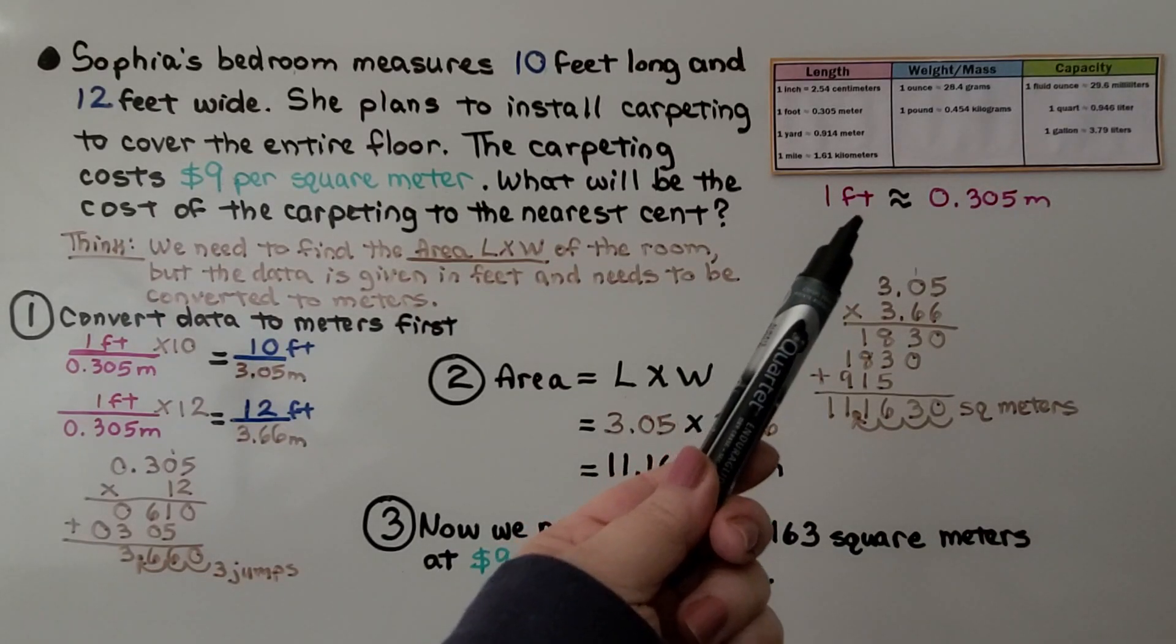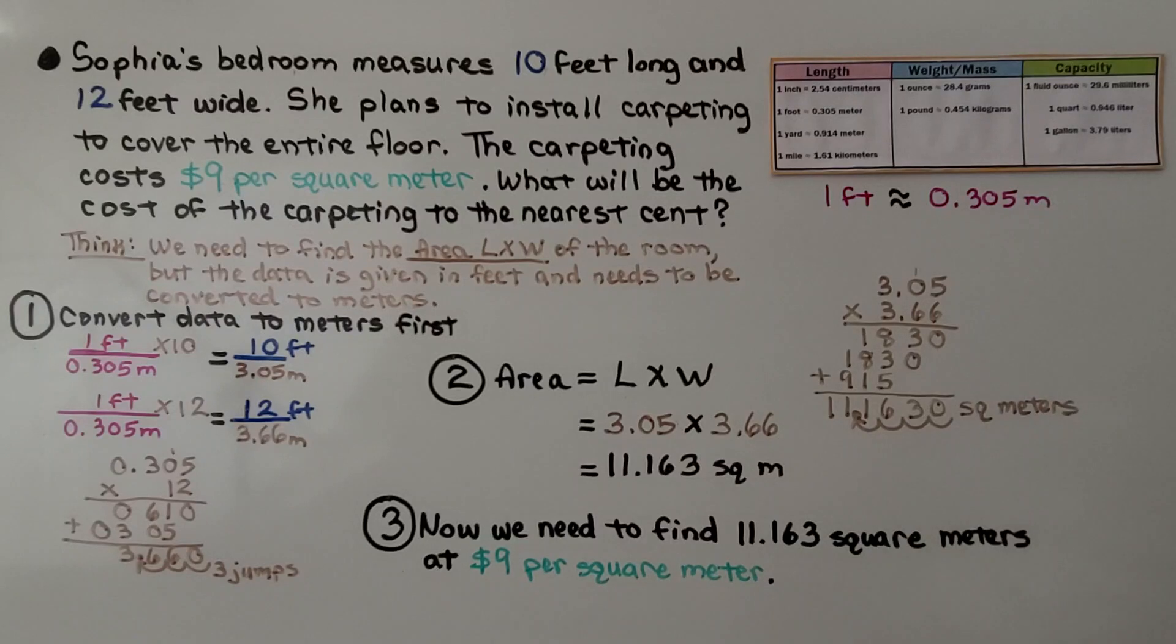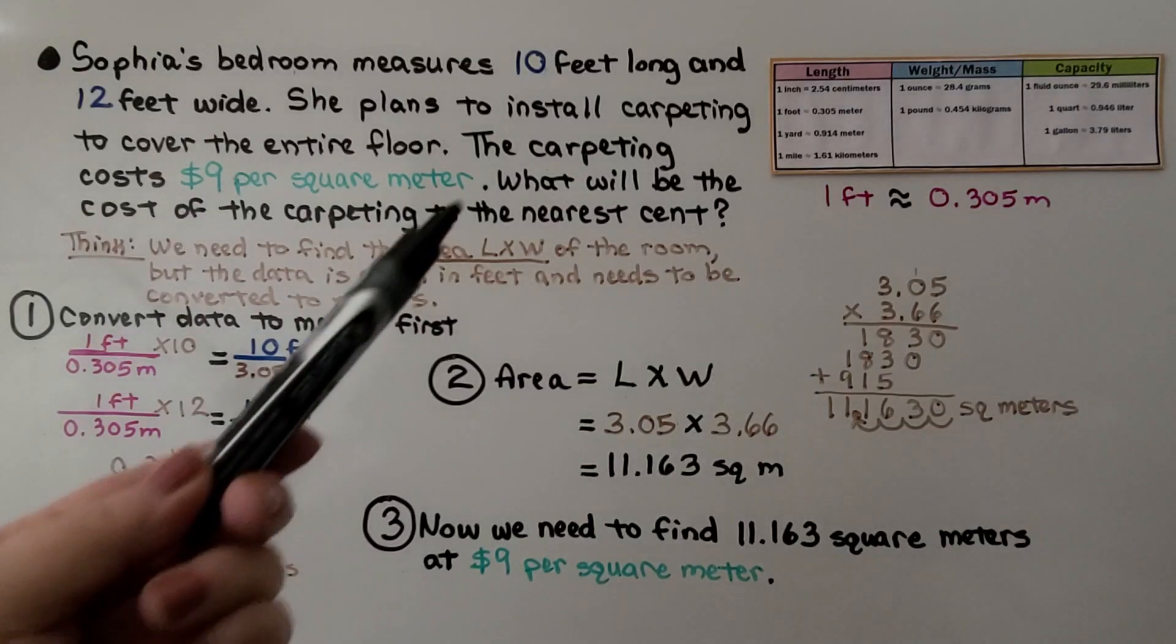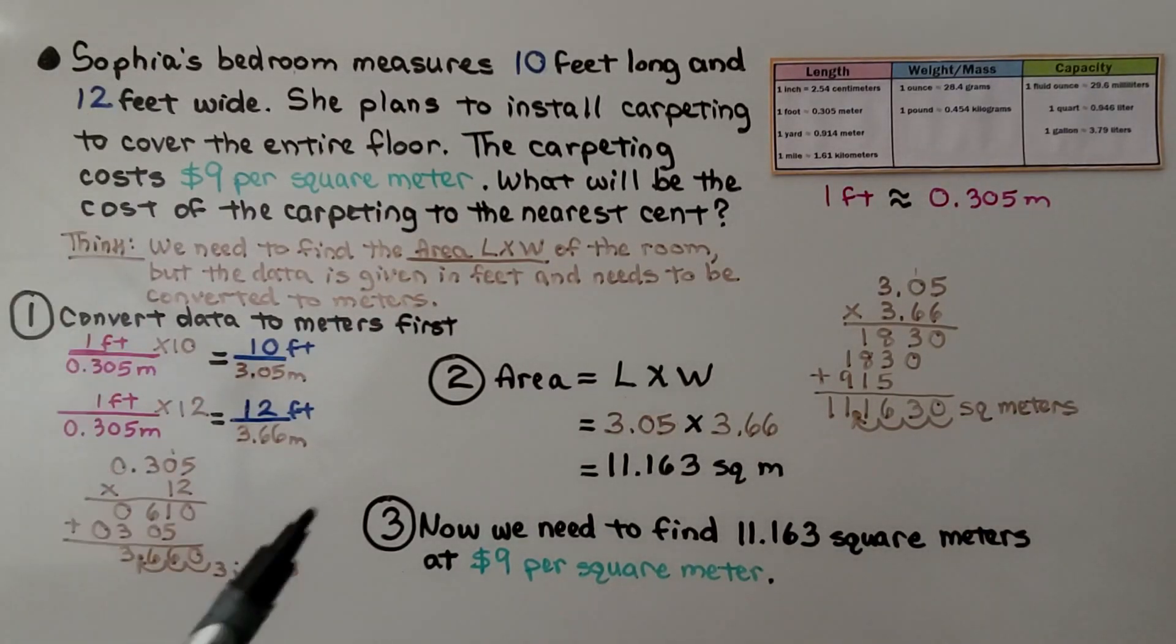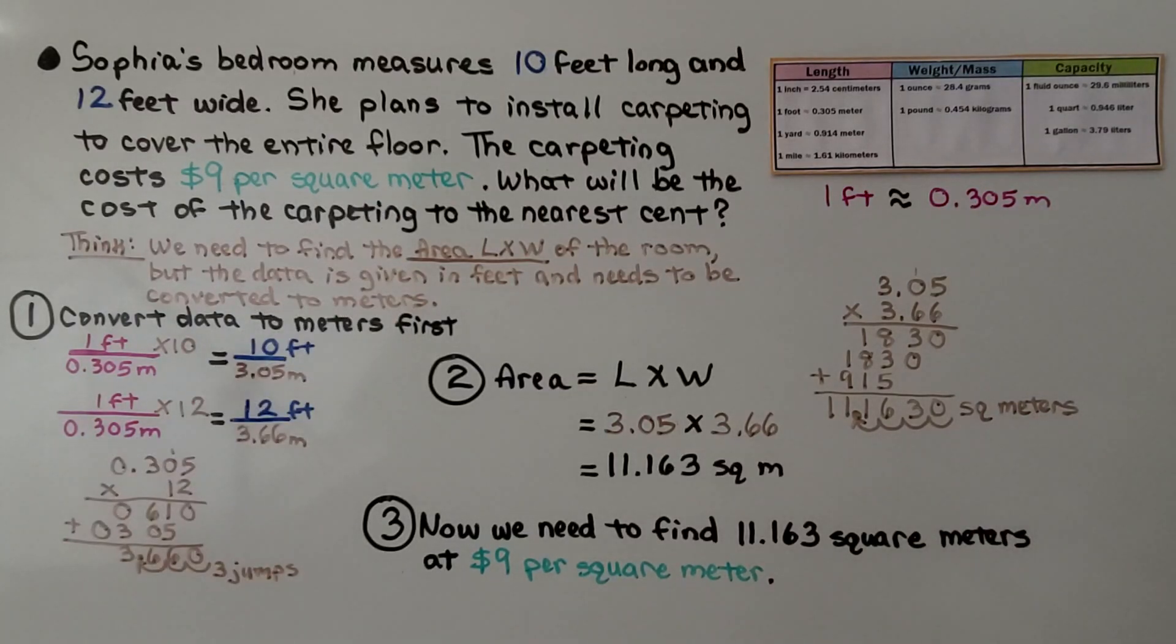Well, we look in our chart and see that one foot is approximately 0.305 meters. And we think, we need to find the area, the length times width of the room, but the data is given in feet and we need it to be converted to meters. So the very first step, we convert the data to meters first.